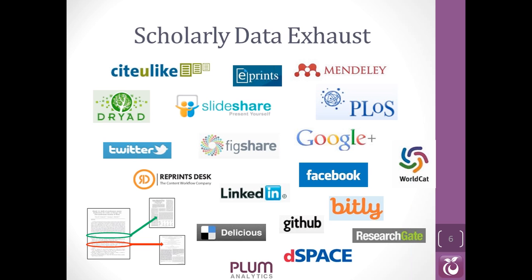What's happened with online research is that because it's online and networked, there's a creation of what we call data exhaust. A lot of places now show evidence of what's going on with a researcher's work. Bibliographic management systems such as Mendeley take the place of the big piles of articles on the desk we've had in the past — the places where I save something I may cite later. Scientists have always talked to each other, but now some of those conversations we can peer into.